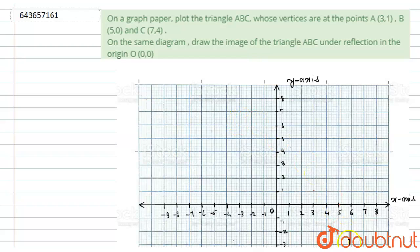Student, let's start with the question. Here we have given on graph paper plot triangle ABC whose vertices are at the points A (3,1), B (5,0) and C (7,4). On the same diagram, draw the image of the triangle ABC under the reflection in the origin O (0,0). So for that, let's start with this solution.